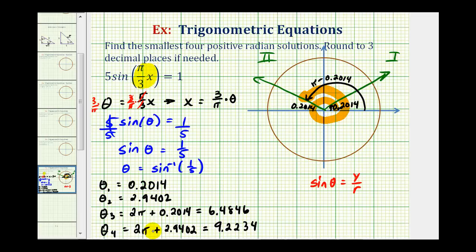But we're not done now. Remember our goal is to solve for x, not θ, where x = 3/π times θ. So we'll have to take these values here and then multiply by 3/π. And we'll do that on the next slide.